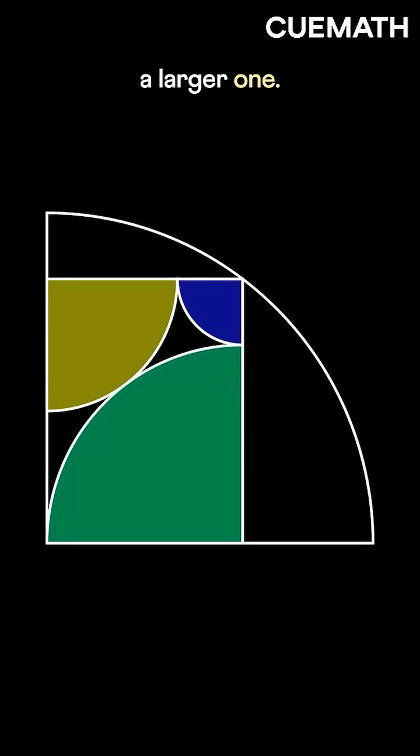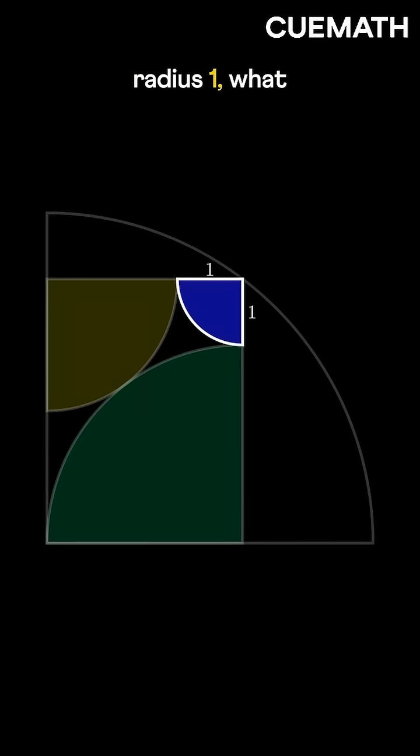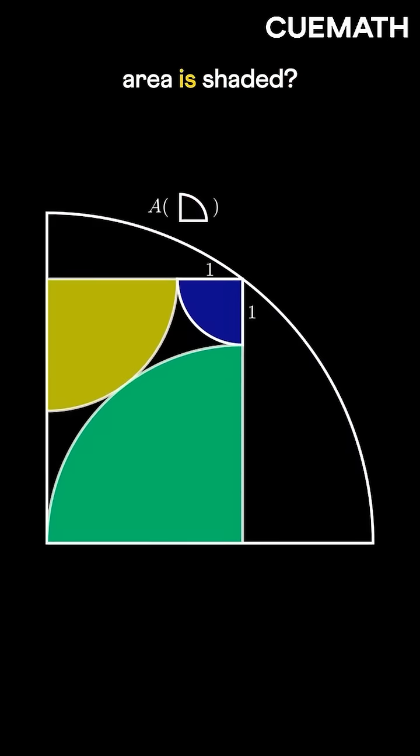Three quarter circles are arranged inside a larger one. If the smallest has radius 1, what fraction of the total area is shaded?